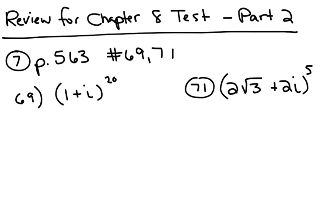This is part 2 for the review for the chapter 8 test. We're on problem number 7, page 563, numbers 69 and 71. In 69 and 71, we want to raise to a power a complex number in polar form. So the first thing we're going to do is rewrite 1 plus i in polar form.